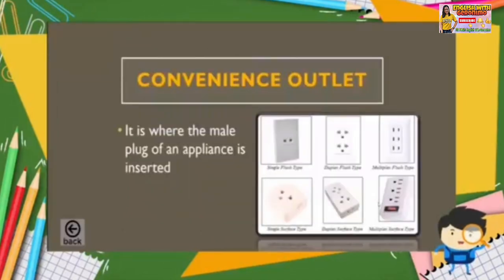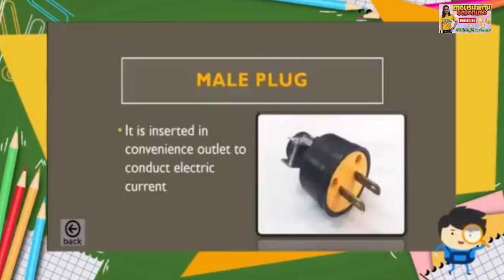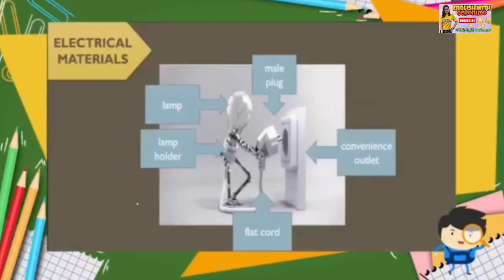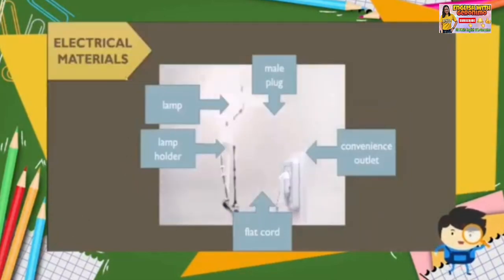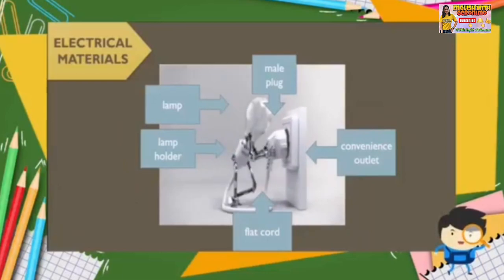First is convenience outlet — it is where the nail plug of an appliance is inserted. What is a nail plug? A nail plug is inserted in a convenience outlet to conduct electric current. Those are the five examples of electrical materials.